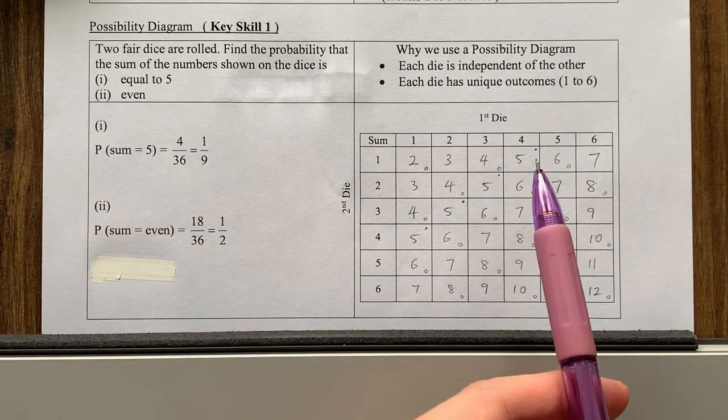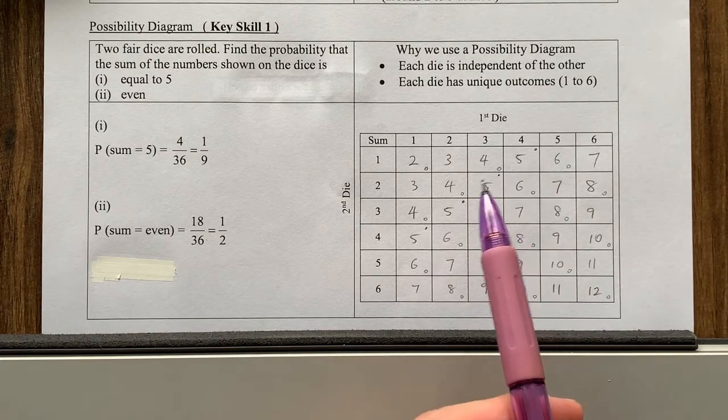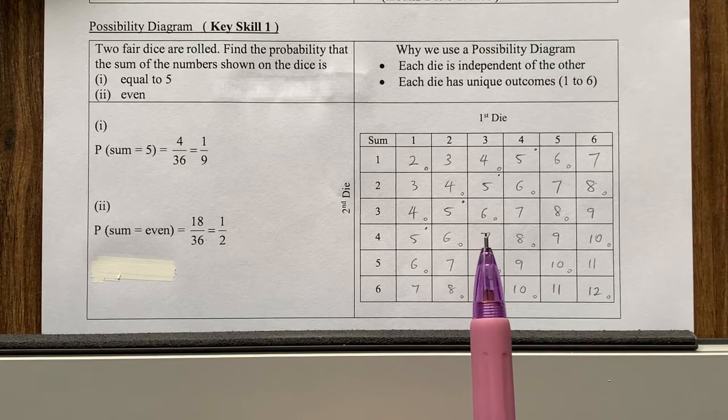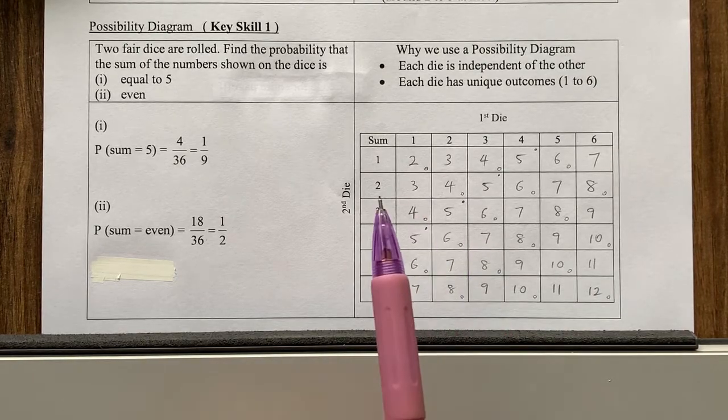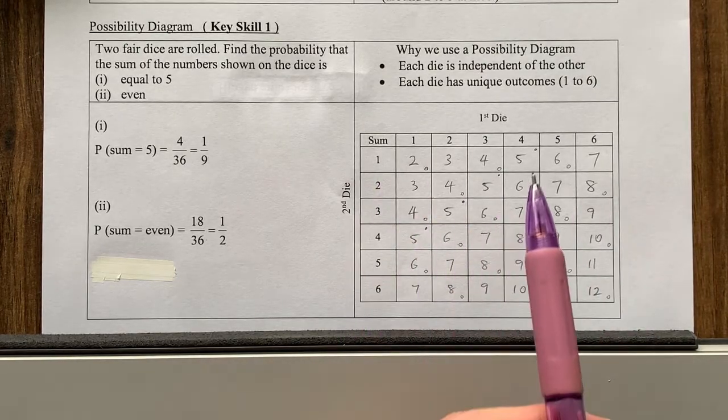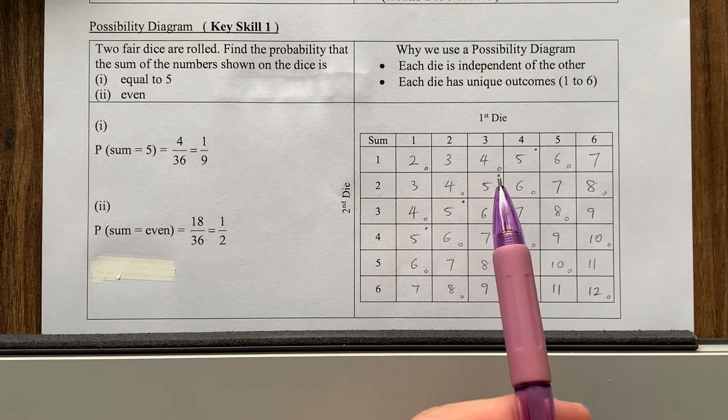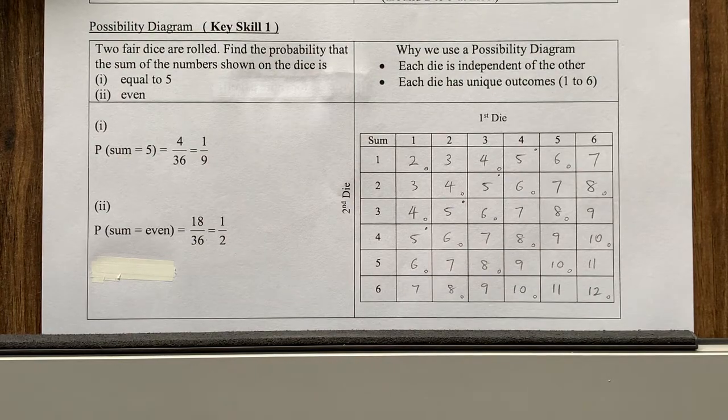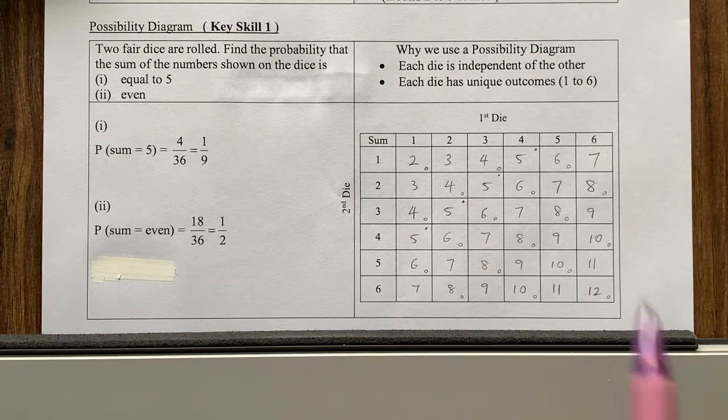And another thing you'll notice is there's a small dot at the corner for all the fives. I did this to label as I count, so it's easier. So I don't forget how many are there. So I literally look for five, I put a dot. Five, put a dot. Five, put a dot. Then eventually I count how many dots are there. Okay, because we're going to use this diagram many, many times.